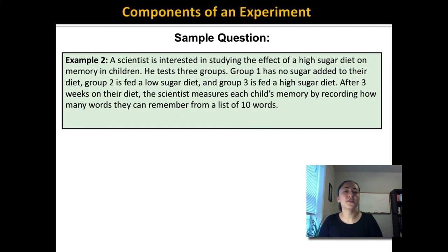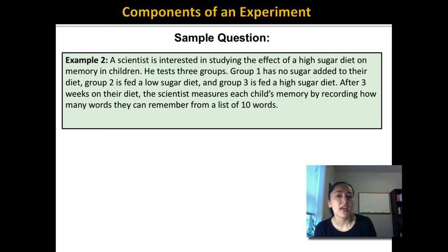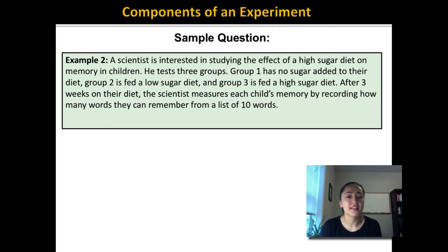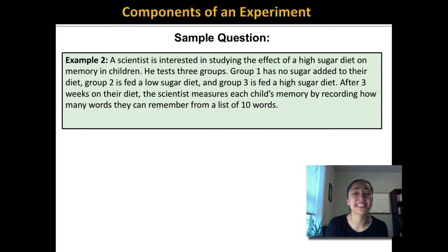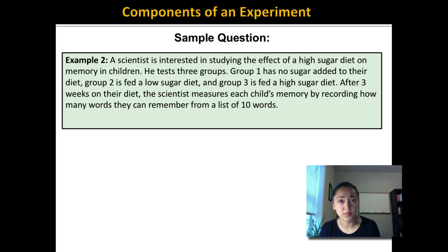Here's an example: a scientist is interested in studying the effect of a high sugar diet on memory in children. He tests three groups — group one has no sugar added to their diet, group two is fed a low sugar diet, and group three is fed a high sugar diet. After three weeks, the scientist measures each child's memory by recording how many words they can remember from a list of 10 words. Pause the video if you need to, and pick out: what is the dependent variable, what is the independent variable, and is there a control group in this study?